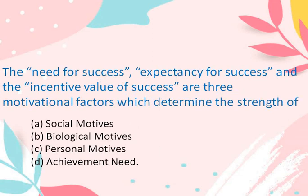The need for success, expectancy for success, and the incentive value of success are three motivational factors which determine the strength of: Social Motive, Biological Motive, Personal Motive, or Achievement Motive. The correct answer is D, Achievement Motive. All three factors are called achievement needs.